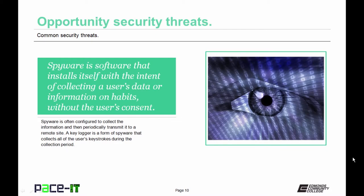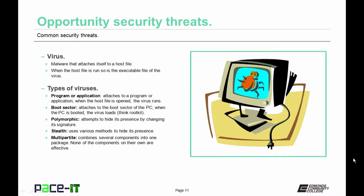Another type of malware is spyware. Spyware is software that installs itself with the intent of collecting user data or information on habits without the user's consent. It's often configured to collect this information and send it to a remote site at a specified time, or store it in a hidden file and wait for the attacker to collect it. It has to have a host file in order to operate; when the host file is run, the virus is executed and the payload is delivered.